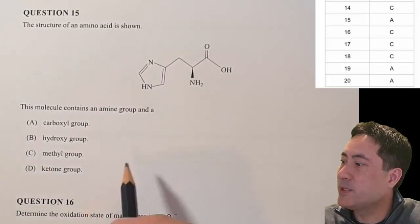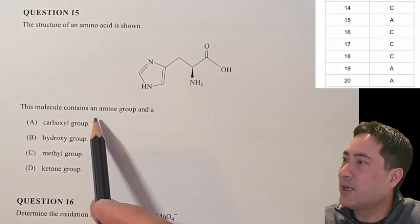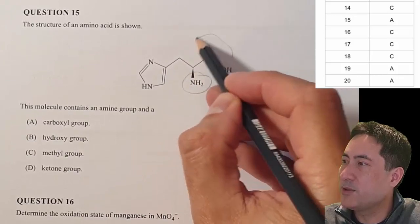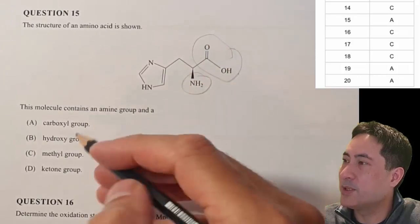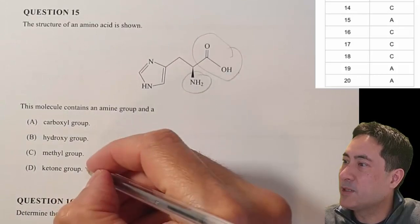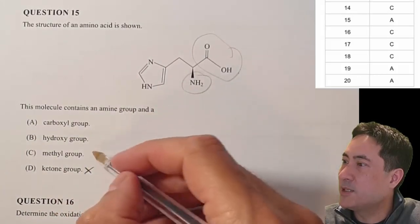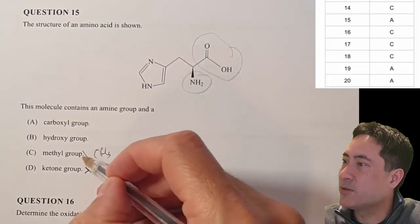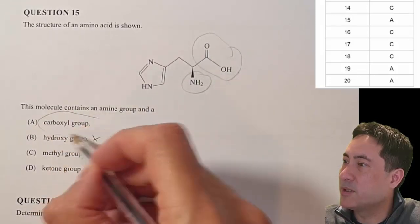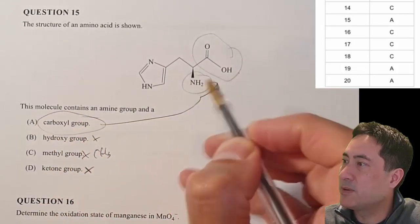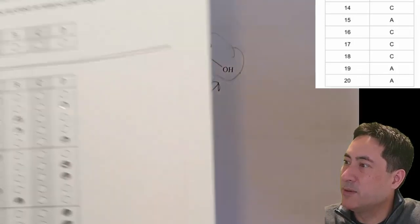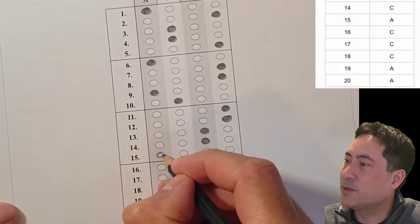Question fifteen: the structure of amino acids is shown. The molecule contains an amine group and a carboxylic acid group — you should have that memorized by now. The distractors are just trying to break up the carboxyl group into hydroxyl and ketone. God knows where the methyl group came from in one of them. That one's just a walk in the park. Question fifteen is A.